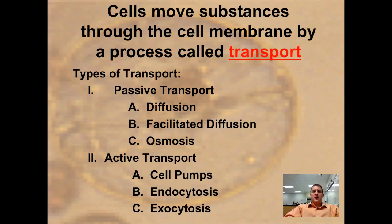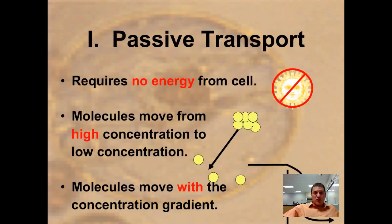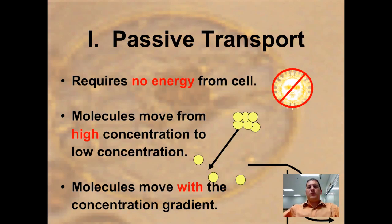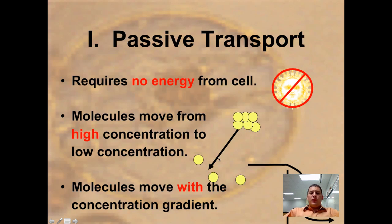There are several different types of transport methods. The first type is passive transport, and there are three types: diffusion, osmosis, and facilitated diffusion. Active transport includes cell pumps and, mainly, endocytosis and exocytosis. Passive transport requires no energy — molecules move from a high concentration to an area of low concentration, moving with the concentration gradient.